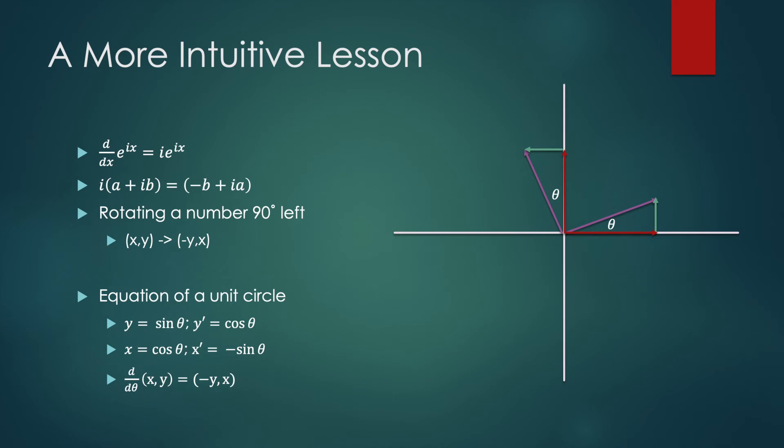If you take any instance of the circle, the derivative at said instance will be a 90 degrees rotation of the vector. Here's a nice way to visualize that: the tangent at any point of the circle is a 90 degrees rotation to the left of the vector at said point.